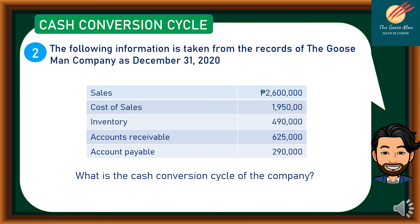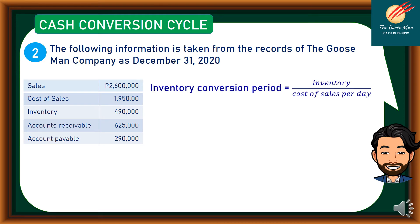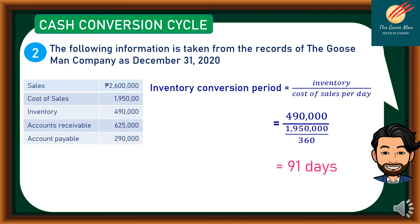First, we will determine the inventory conversion period, which equals inventory divided by cost of sales per day. From the figures, we have 490,000 divided by 1,950,000 divided by 360 days. The inventory conversion period is equal to 91 days.